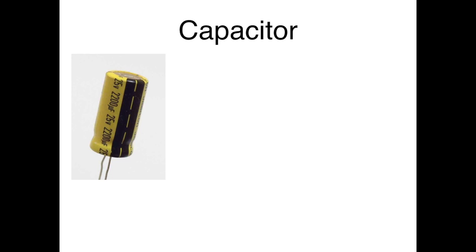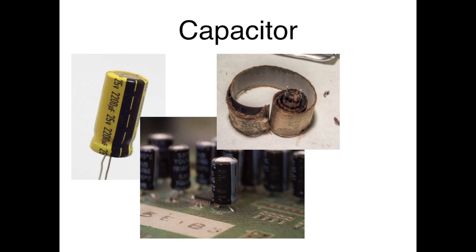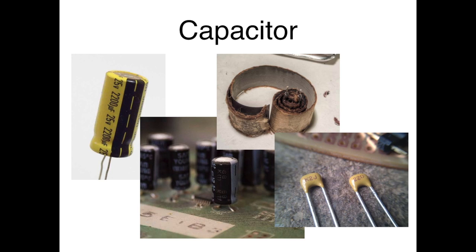Here's what a capacitor looks like today. You'll find many of them in common circuits — for example, if you open up your television, you'll see many of these capacitors. Here's what it looks like if you open one up; you can see the metal sheet and the insulation. And here's a much smaller capacitor.